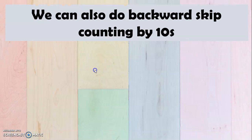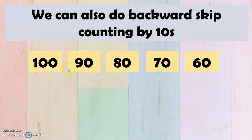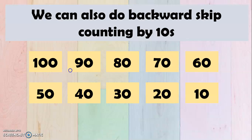We can also do backward skip counting by 10s. So we may start with 100, 90, 80, 70, 60, 50, 40, 30, 20, and 10.